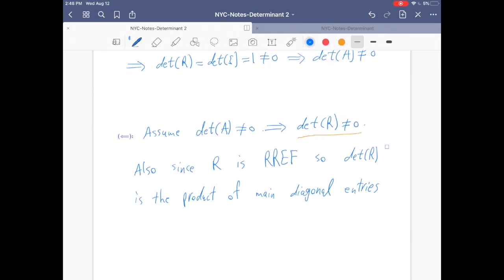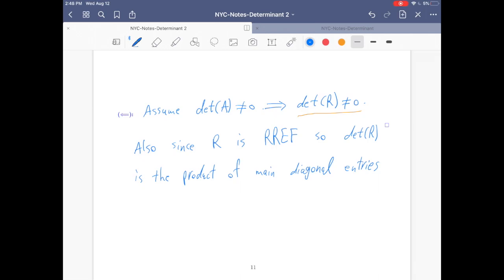Since det(R) is not zero, and this determinant is the product of main diagonal entries, that implies there is no zero row in R.